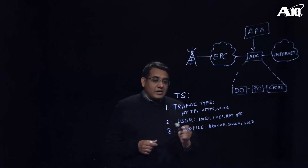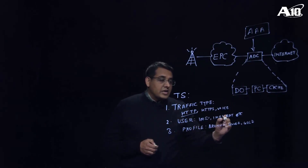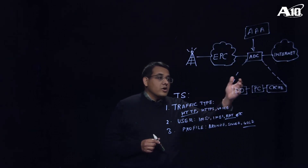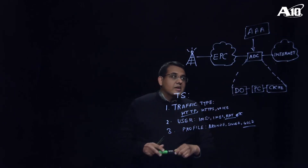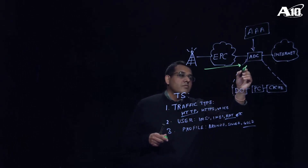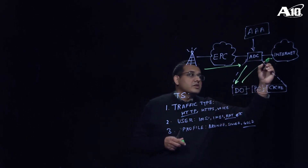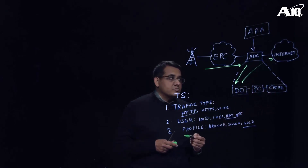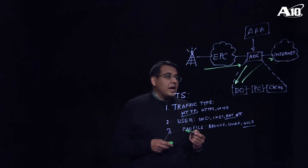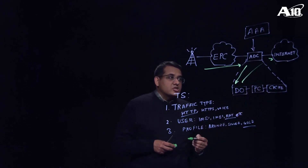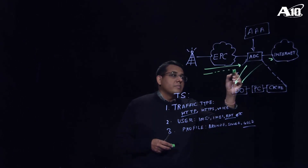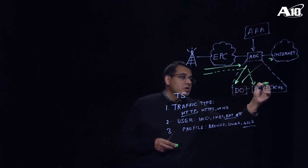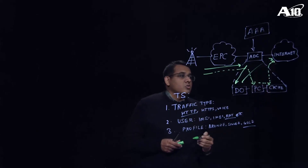For example, if the traffic type is HTTP, if the user is connecting to a radio type of 3G, and if the profile is gold, we can say that this traffic qualifies to undergo a data optimization service. When the traffic comes in, we will send it to the data optimization service, and then send it out to the internet. We will only selectively route the traffic so that it does not have to go through services to which the user has not subscribed. For example, if another user has subscribed to parental control and caching service, we will send the traffic to parental control, to the caching service, and then out towards the internet.